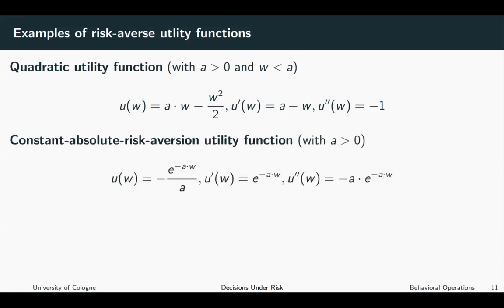Another important class of risk averse utility functions are the constant absolute risk aversion utility functions — so-called CARA utility functions. The CARA utility function is given by minus e to the power of minus a times w, over a. The first derivative is e to the power of minus a times w, which is positive, and the second derivative is minus a times e to the power of minus a times w, which is negative.